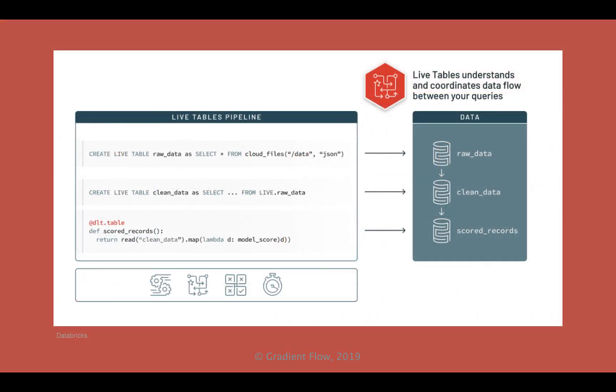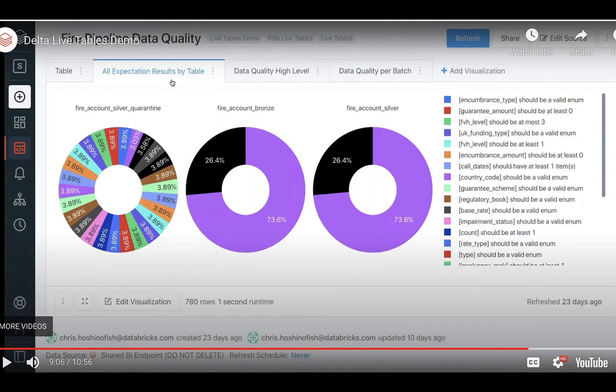Delta Live Tables enables data teams to build production ETL pipelines writing only SQL queries. With DLT, development data, production data, and staging data are each isolated and can be updated using a single code base.